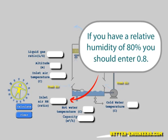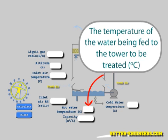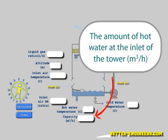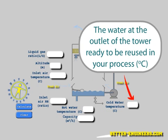If you have a relative humidity of 80%, you should enter 0.8. Hot water temperature, expressed in centigrade, is the temperature of the water being fed to the tower to be treated. The capacity of the tower, in cubic meters per hour, is the amount of water at the inlet of the tower.